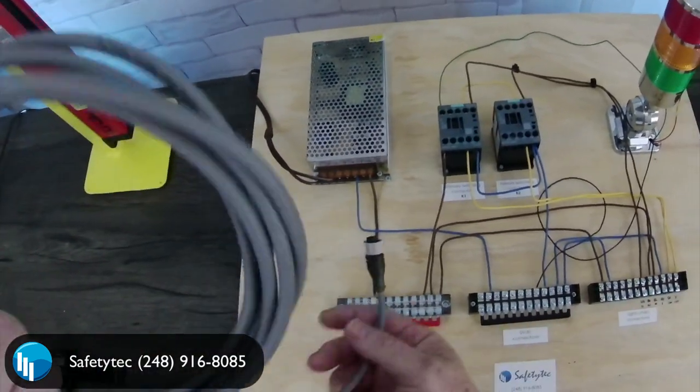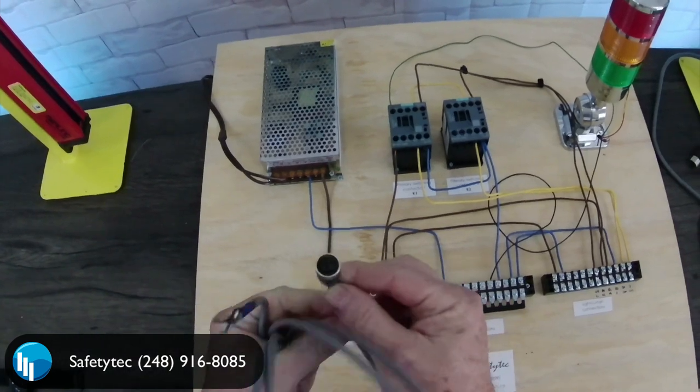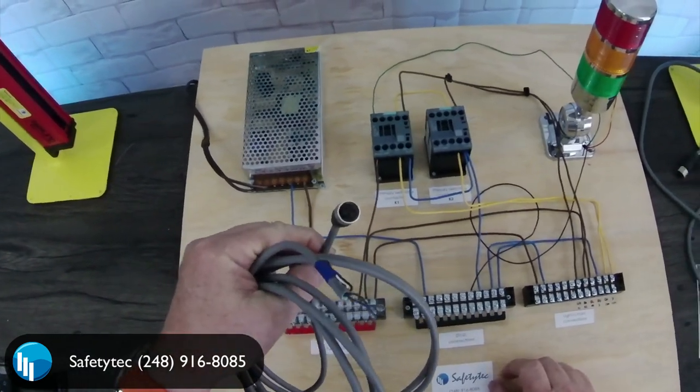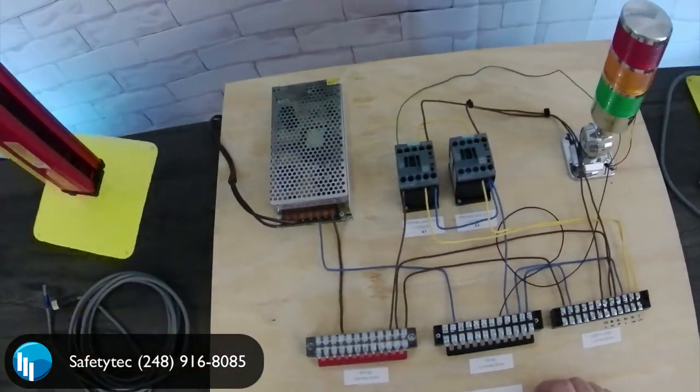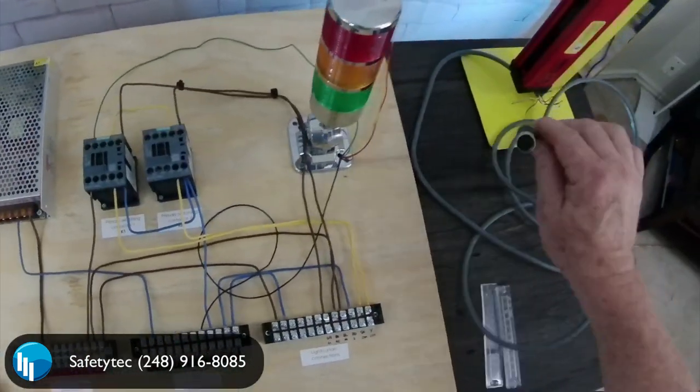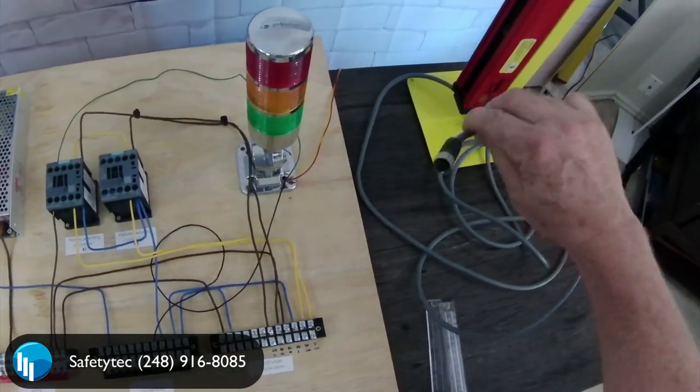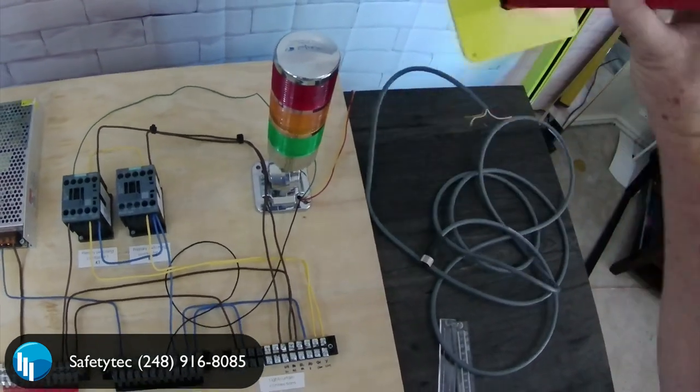Also, we have a cable for our transmitter, which is just a five-pin cable, and here is our transmitter unit here. And we have an eight-pin cable for the receiver unit, and here is the receiver guard here.